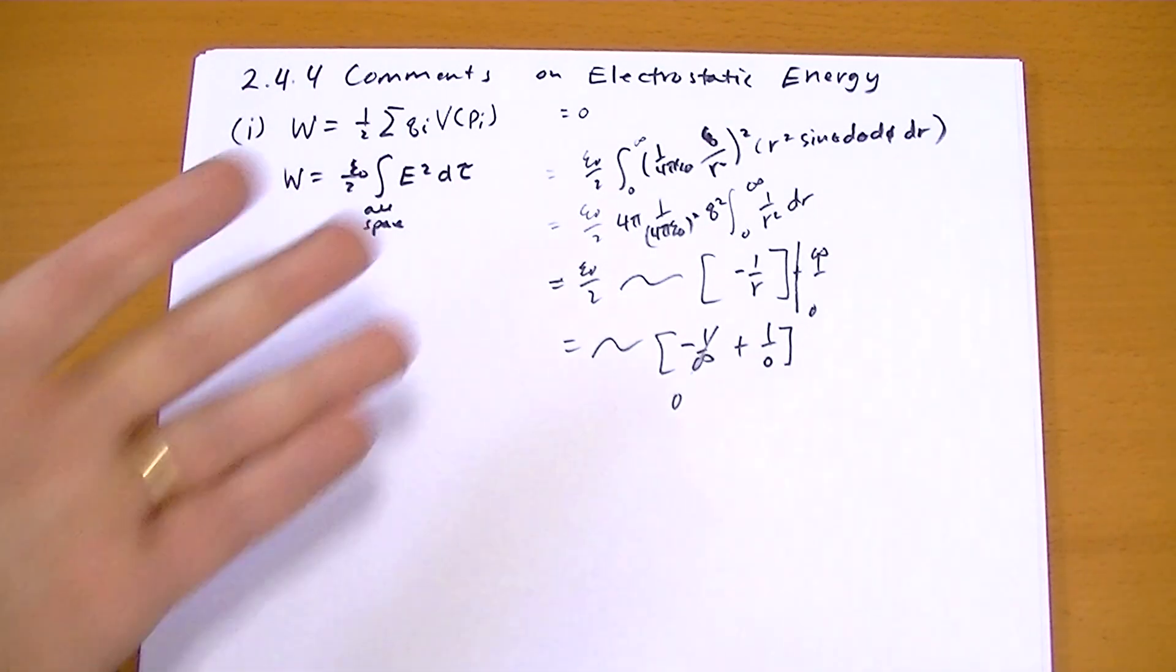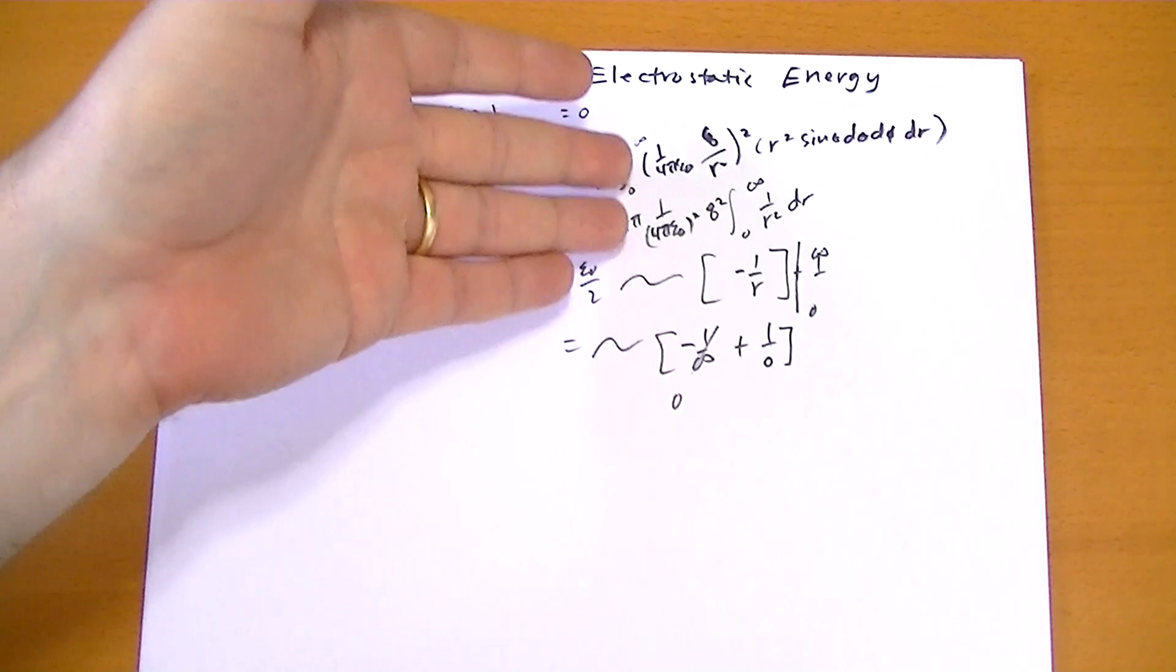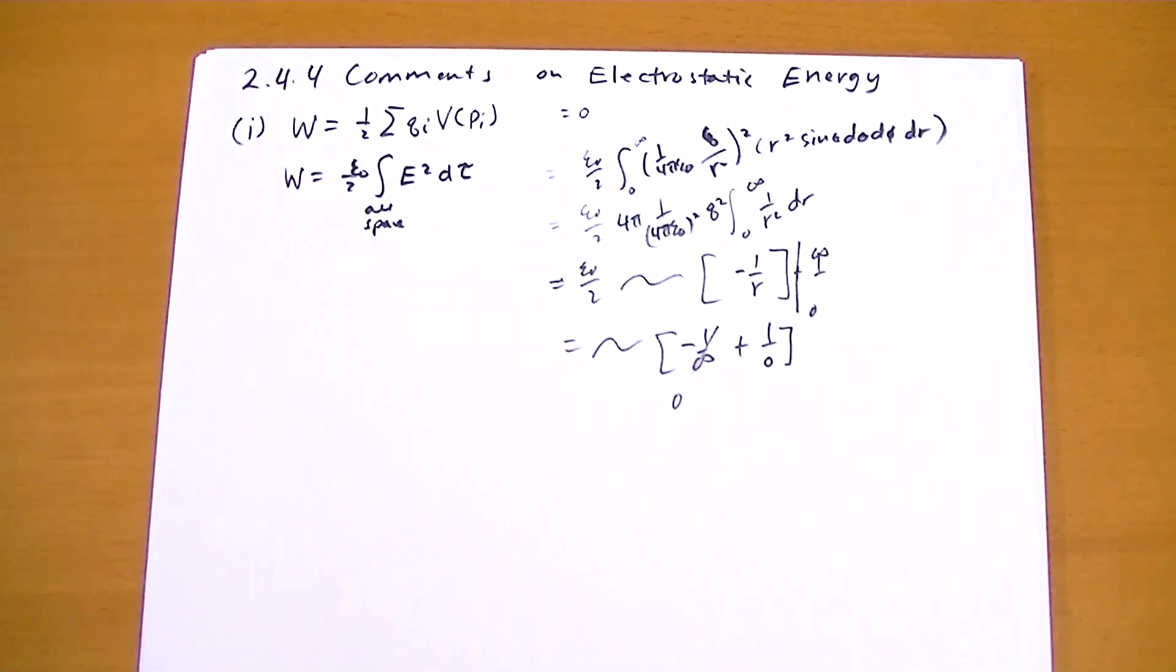And with the spherical problem, we didn't have this issue because we weren't integrating from zero to the radius of the sphere. The electric field was zero inside of there, so we didn't have to do that. But now we do, and this thing blows up. It doesn't work at all.